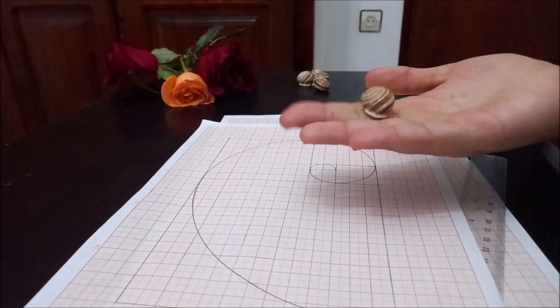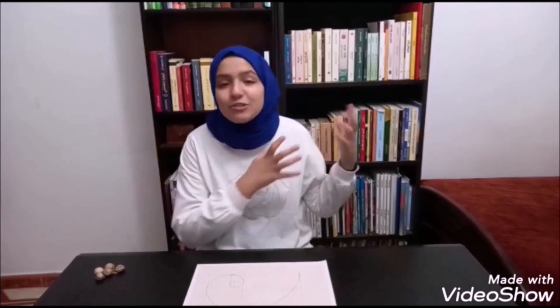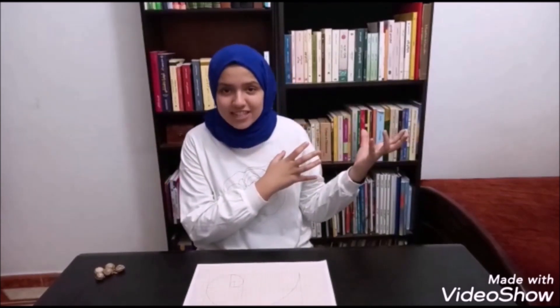It looks like snails. Actually, this spiral appears in waves in the ocean, in compositions of art, and in our galaxy as well.